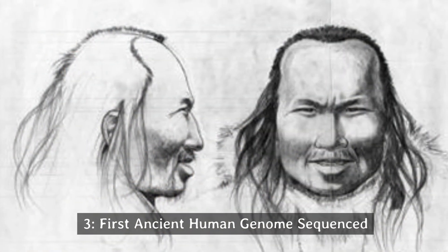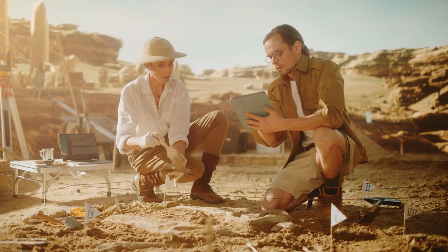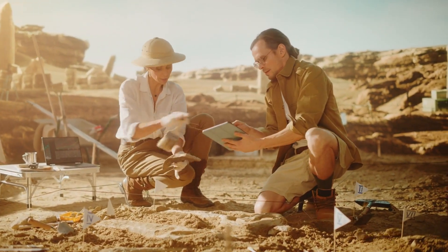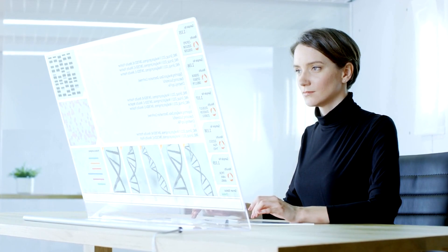Number 3: First ancient human genome sequenced. In 2010, scientists gained a new tool to study the ancient past and the people who inhabited it. Researchers used a hair preserved in permafrost to sequence the genome of a man who lived some 4000 years ago in what is now Greenland.